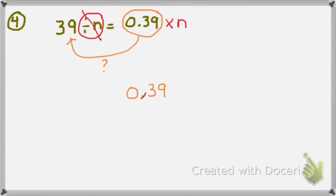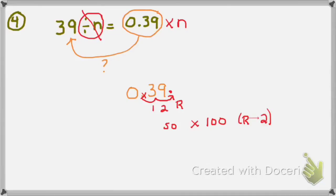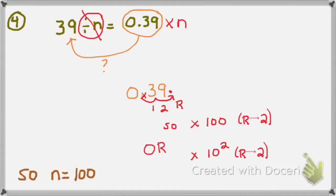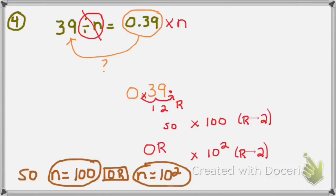I'll write down 0 and 39 hundredths, and what do I need to do to make it into 39? I'll move my decimal to the right — cross out the decimal and move it two places to the right, turning it into 39. So what could I multiply by to move my decimal two places to the right? I know that anything times 100 would move my decimal to the right two places, so n equals 100. There's another correct answer as well: if I multiply anything times 10 to the 2nd power, that also moves my decimal two places to the right. So n can equal 100 or n can equal 10 to the 2nd power — either answer would be correct.